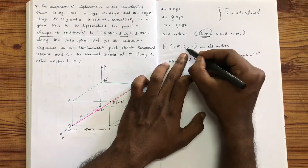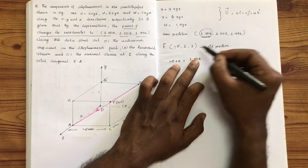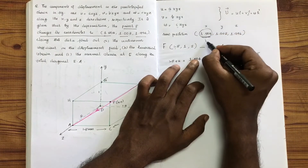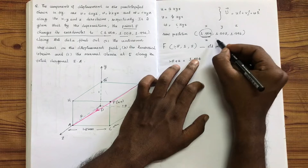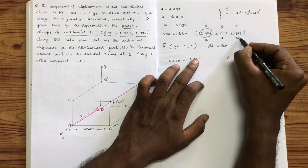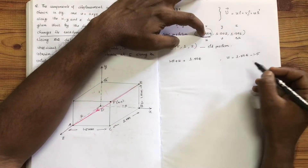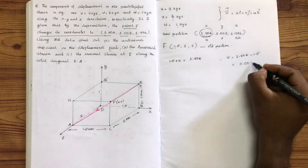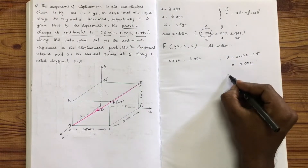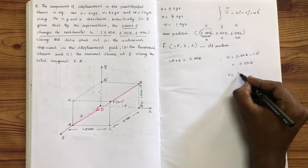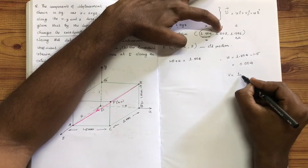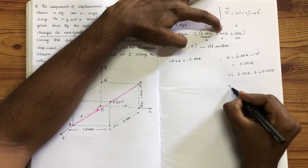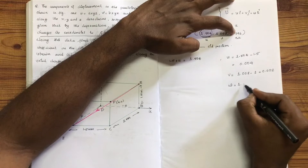Corresponding y coordinates: displacement is v; corresponding z coordinates: displacement is w. This gives us u = 0.004, v = 0.002, and w = -0.004.